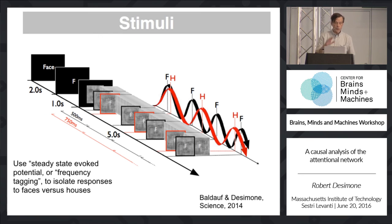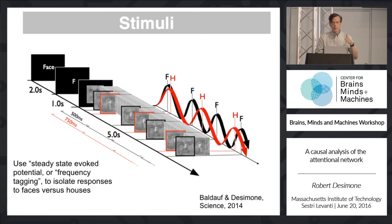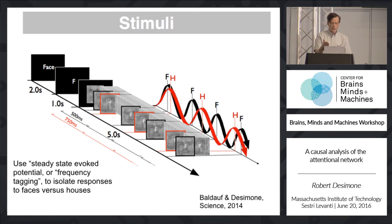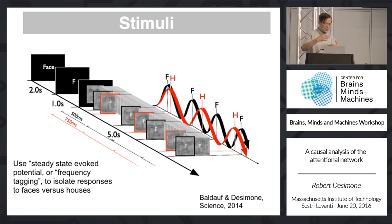For MEG, we need to be able to identify which signals are coming from the processing of faces versus houses. We make use of a technique known as the steady-state evoked potential, or frequency tagging, in which we present stimuli in a temporal stream of faces and houses. Subjects do a one-back memory task and are cued for whether they should attend to the face or the house on a given trial.